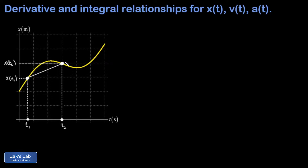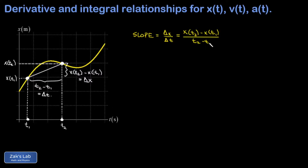If we connect the two points on the curve with a straight line, the slope of that is going to be rise over run. The rise here is our final x value minus the initial, sometimes called delta x, and our run is t2 minus t1, also called delta t. So the slope gives us delta x over delta t, with units of meters per second. Taking the total displacement on this time interval and dividing by how long it took — that's what we call average velocity.